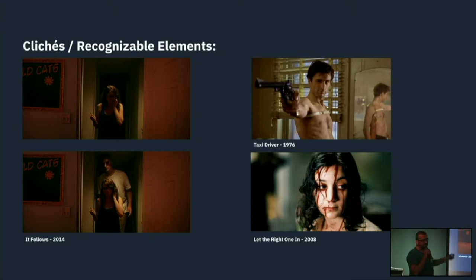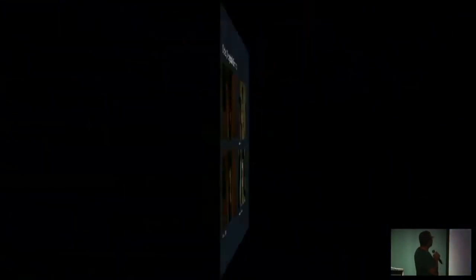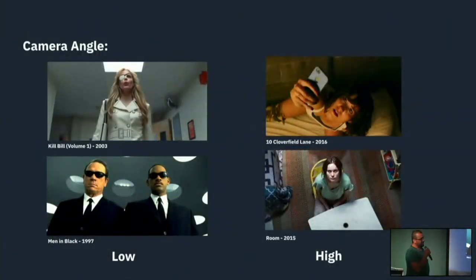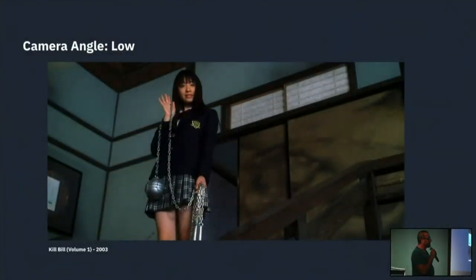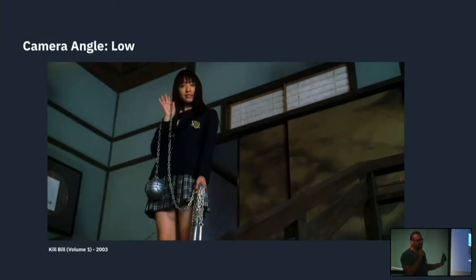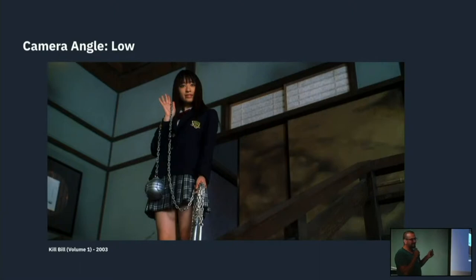There are also genre clichés. In a horror film, if you see characters with their backs to a hallway, you know something creepy is coming. Camera angles: looking at a character from above makes them look vulnerable; from below, they look powerful. In Kill Bill, Tarantino messes with us — he gives a character who looks very friendly a low angle with oblique lines in the back. You know she's badass. The next scene is not going to go well.